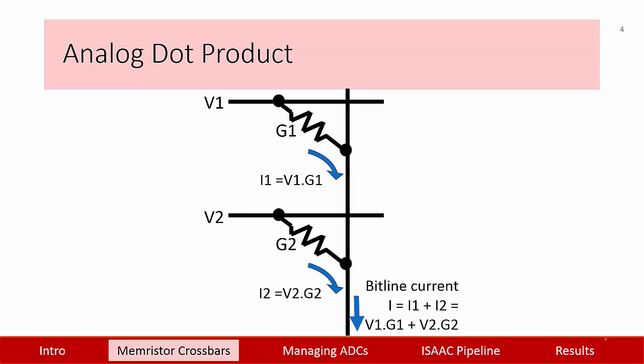Let's start with the design of an analog unit that performs dot products. Consider this simple circuit with three wires and two resistors. Assume the two resistors have conductance values of G1 and G2. If I apply voltages V1 and V2 at these two wires, the first wire injects a current V1 times G1 into this vertical wire called a bit line. The second wire similarly injects a current V2 times G2 into the bit line.